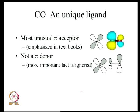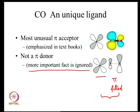What is not emphasized in most textbooks is that carbon monoxide is not an effective pi donor. The filled pi orbital on carbon monoxide can interact with the filled metal d orbital, and this interaction turns out to be a repulsive interaction that must be minimized. This repulsive interaction is minimized because the overlap between the carbon monoxide and the filled metal d orbital is less, due to the small size of the lobe on the carbon in the pi orbital.